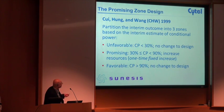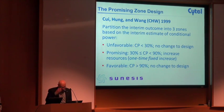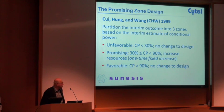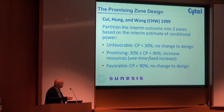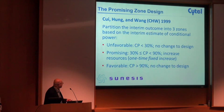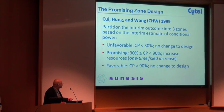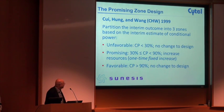They set up a so-called promising zone design where, at the interim analysis, you could decide whether you had promising results or not based on conditional power. The conditional power promising zone was fixed to be between 30% and 90%. Only in this zone would you increase the sample size — a one-time increase. Outside of this zone, there'd be no change.